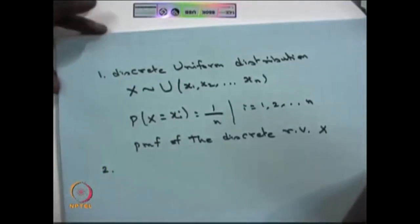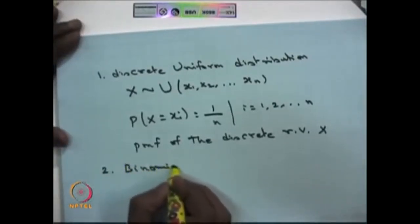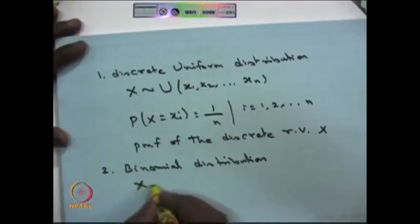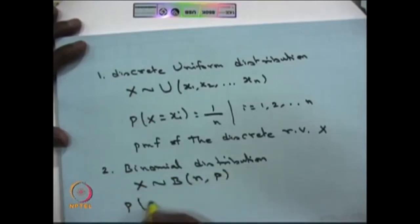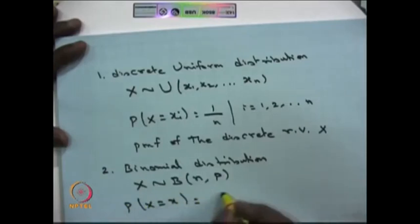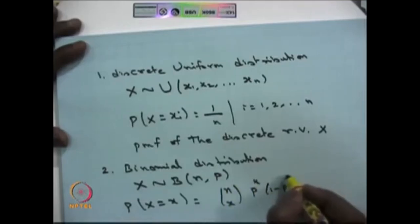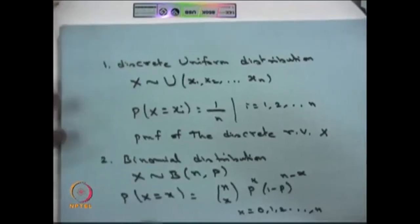The second discrete case is the binomial distribution. When we say the random variable X is binomially distributed with parameters n and p, then the probability mass function is given by nCx times p^x times (1-p)^(n-x), where x takes values 0, 1, 2, and so on up to n. That means it has n+1 jump points.